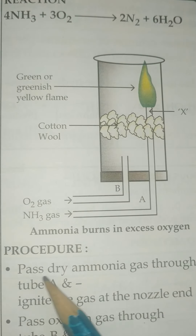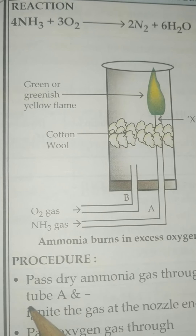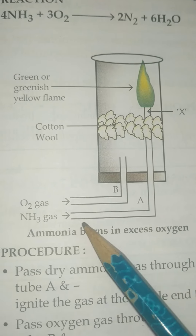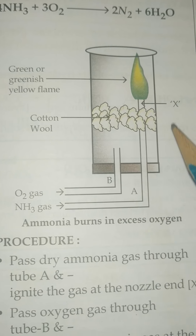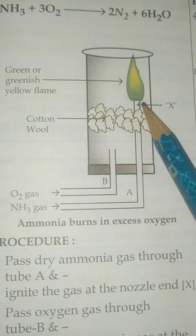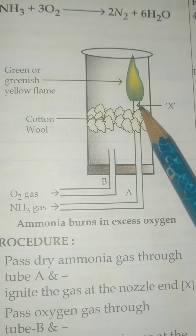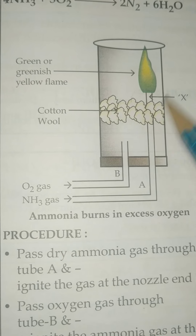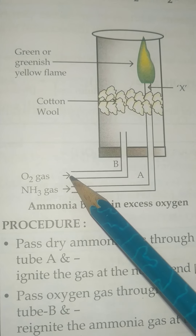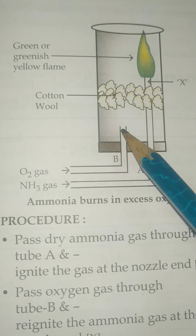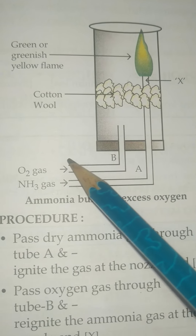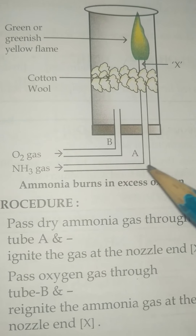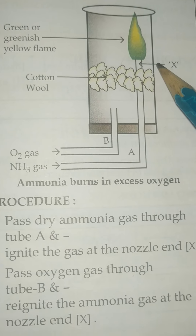You have to pass dry ammonia gas through tube A. We will pass dry ammonia gas through tube A and then ignite the gas at nozzle X. Then we will pass oxygen gas from tube B and again reignite the ammonia gas at the nozzle.